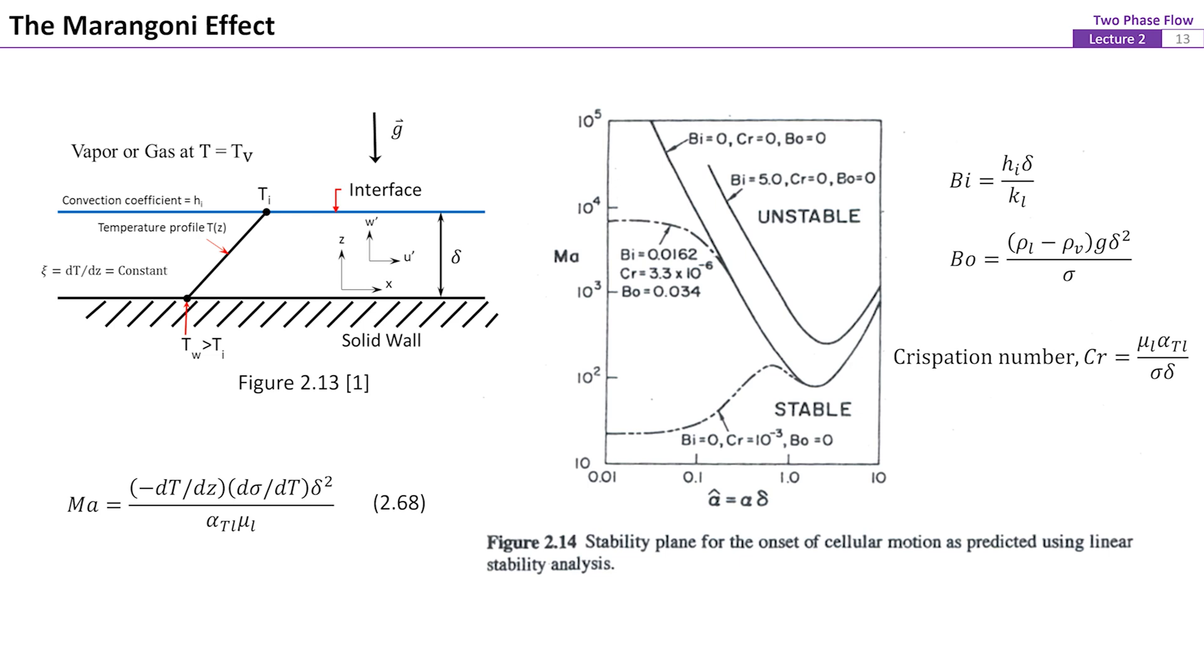Cr is the crispation number. The curves in figure 14 are called neutral stability curves. Under a specific combination of Biot number, crispation number and Bond number, the region above the neutral curve means the system is stable. The neutral curve shifts upward with increasing the Bond number. This means that this thin liquid film system tends to be more unstable if its thickness is decreased.